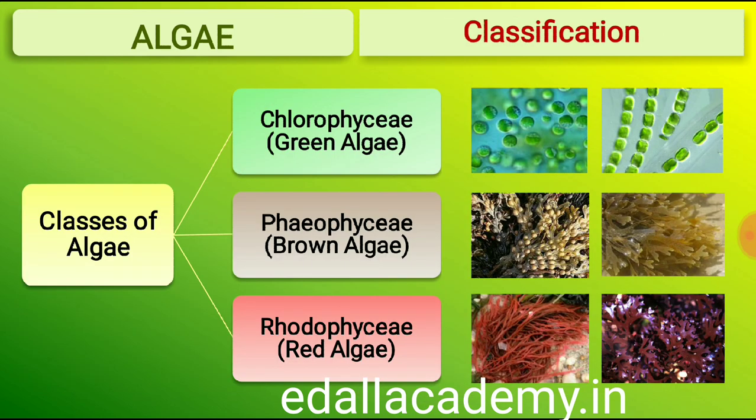Algae are divided into three main classes: Chlorophyceae, Phaeophyceae and Rhodophyceae.